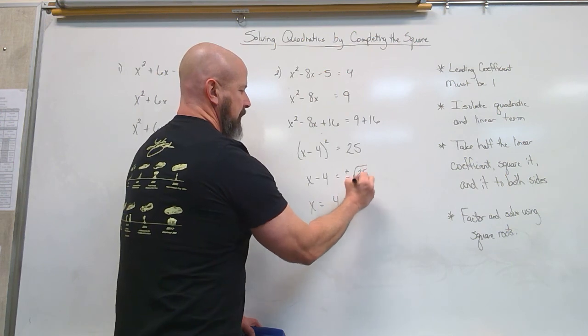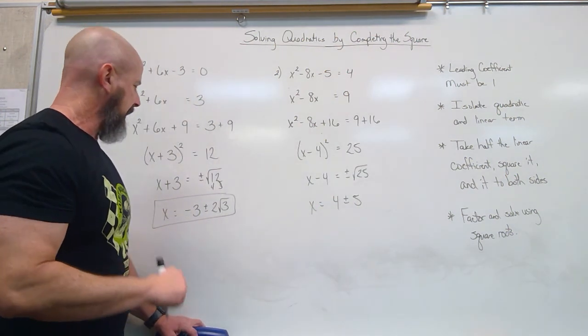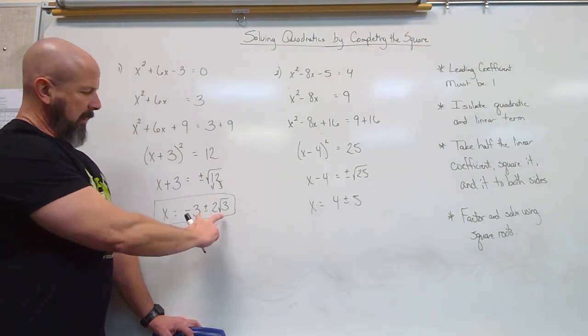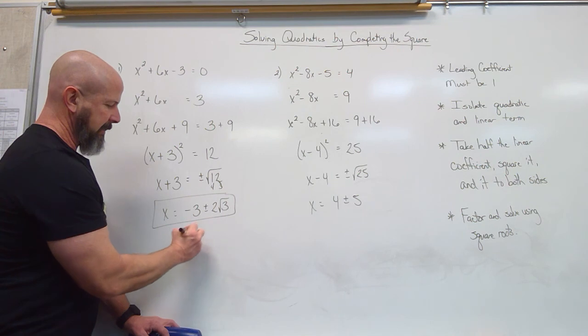So positive 4 plus or minus and root 25 is 5. So one difference here in the final answer. Back on number 1, we can't really add or subtract this. We could write it separate.